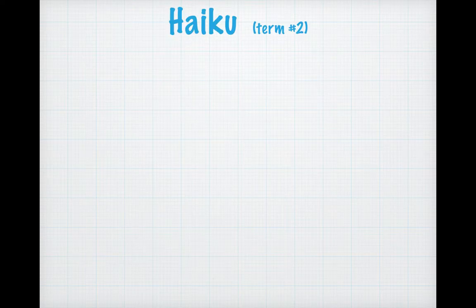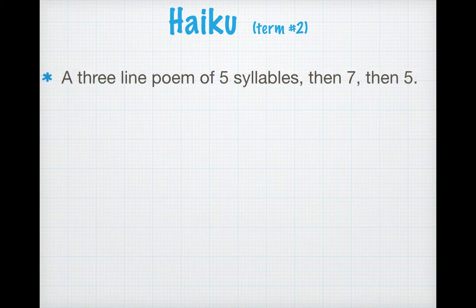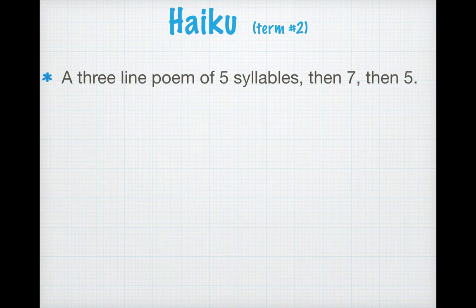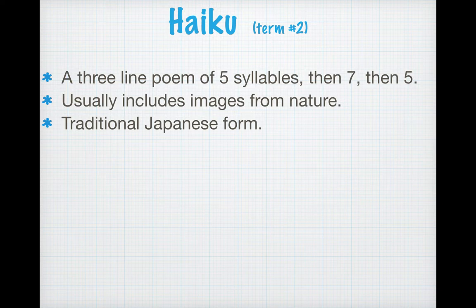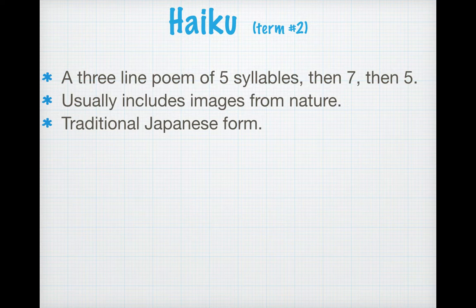The first type of poem that we're going to talk about — drum roll, please — is a haiku. This is term number two in your notes. A haiku is a very short poem. It's only three lines, and it is five syllables for line one, then seven syllables, and then five syllables. Go ahead and hit pause and copy down that definition. Haikus usually include images from nature — almost always they are poems that talk about how different images come together, how they interact, how they're juxtaposed next to each other. This is a very traditional Japanese poetic form. Haiku is actually a Japanese word.